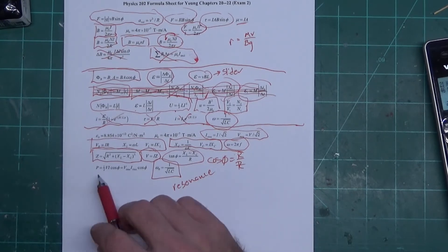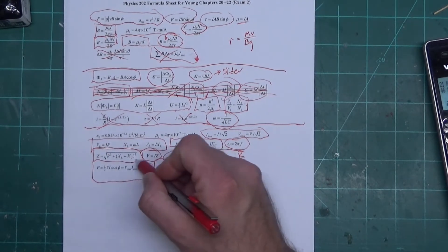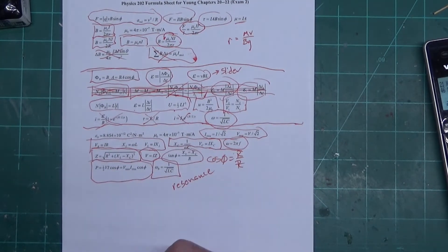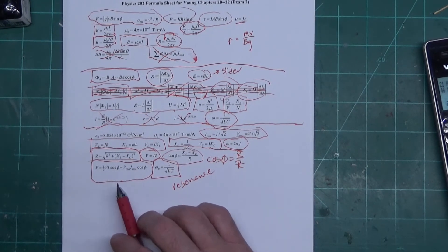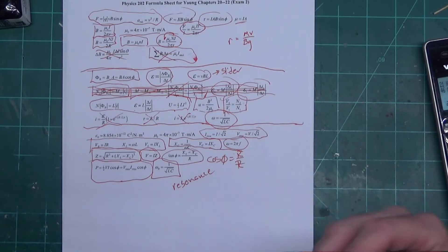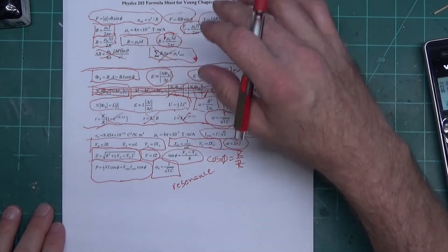Here's power. Power is just not IV like it would be in normal circuits. Power is a mismatch of things because of the phase difference between the voltage and the current due to the capacitor and the inductor.